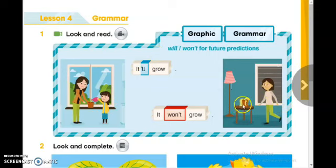Now look at the next picture. What's happened for this plant? Yes, it won't grow because as you can see here this plant doesn't have water or warmth to grow. So we use will or won't for future predictions.